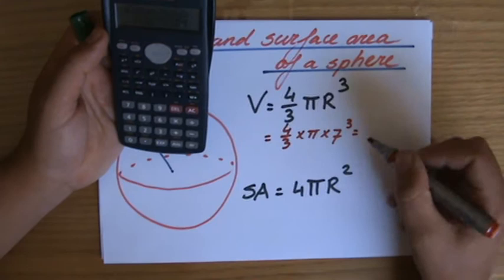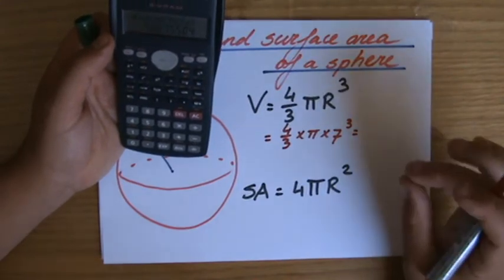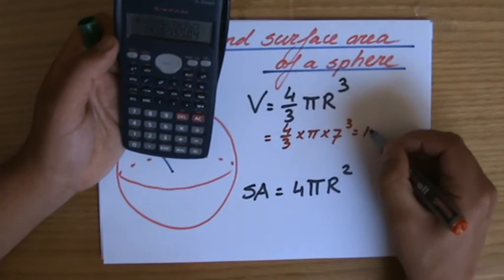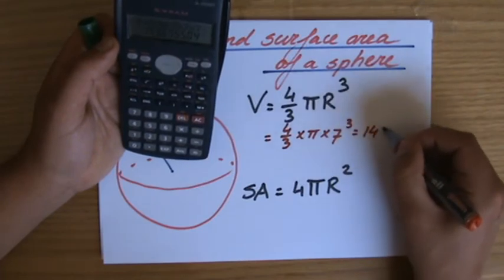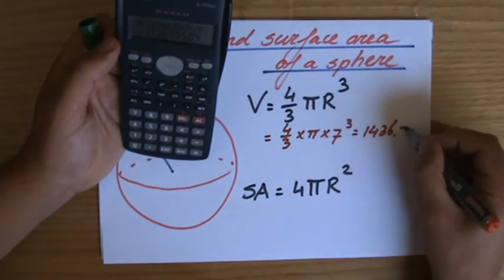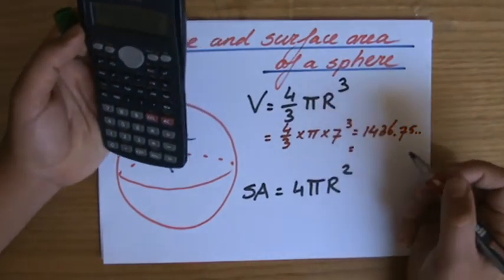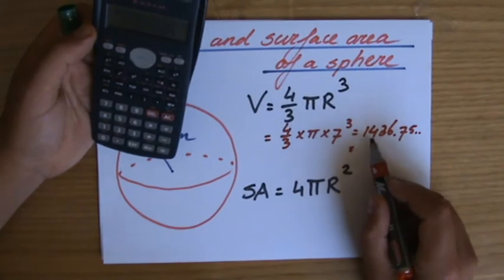I am going to write down the answer correct to three significant figures. No wait, I will write down the answer. It is going to give me 1436.75 and a few more decimals, but to three significant figures that is 1, 2, 3.